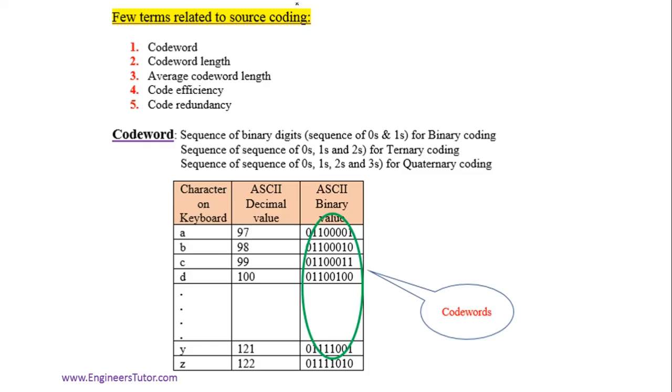I will explain some terms related to source coding: codeword, codeword length, average codeword length, code efficiency, and code redundancy.